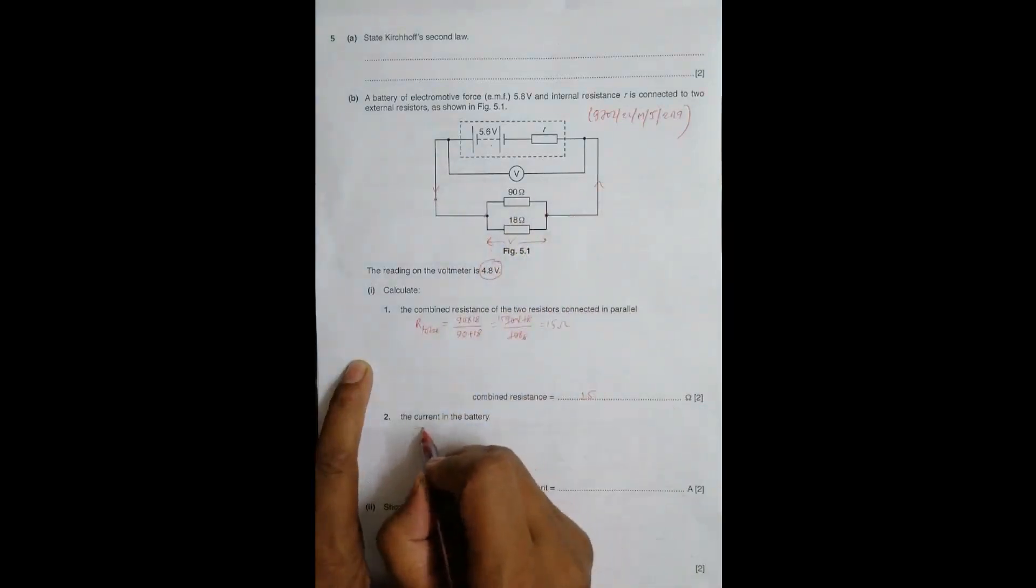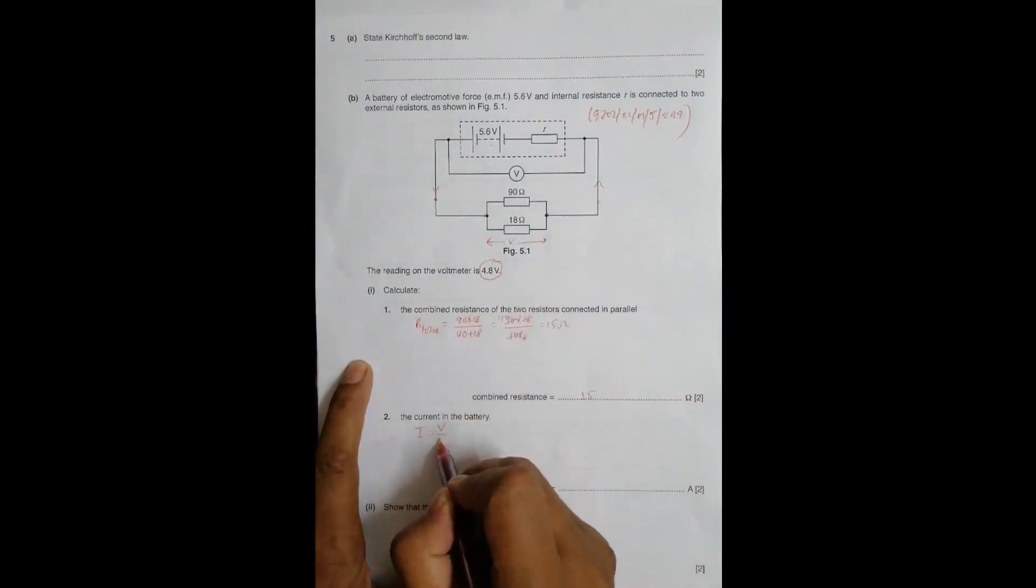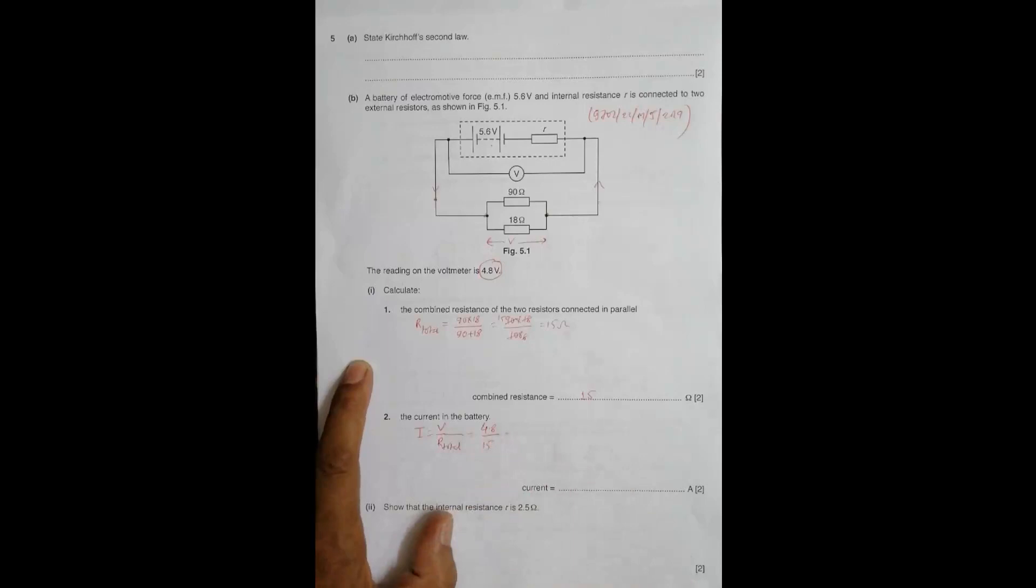The current equals its PD divided by the total resistance. That becomes PD equals 4.8 volts, and r_total equals 15 ohms. So this becomes 4.8 divided by 15, which equals 0.32 amperes.